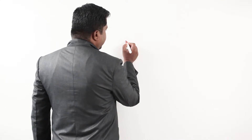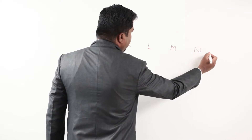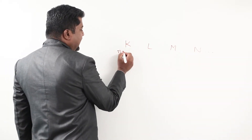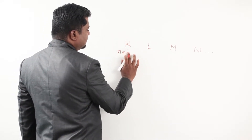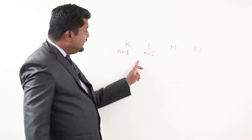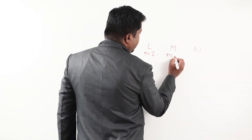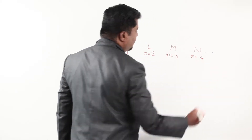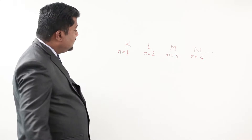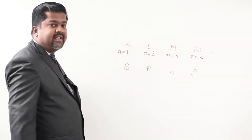Initially the shells are named K, L, M, N and so on. But we know that K means N equal to 1, L means N equal to 2, M means N equal to 3, and N equal to 4 and so on. Here N is the principal quantum number, or main shell number. The subshells are called S, P, D, and F.